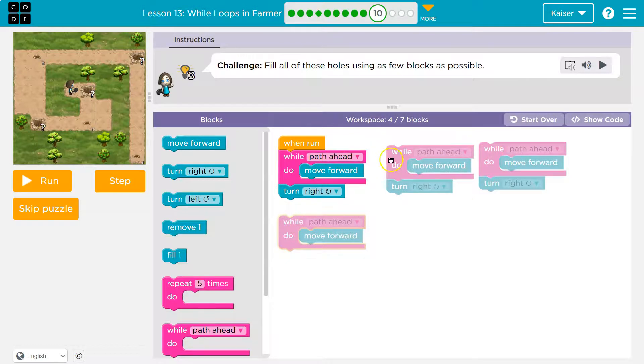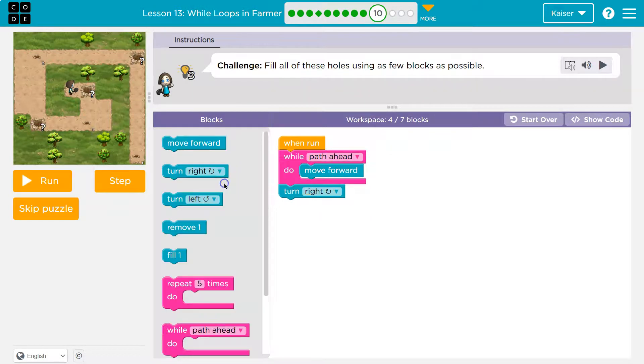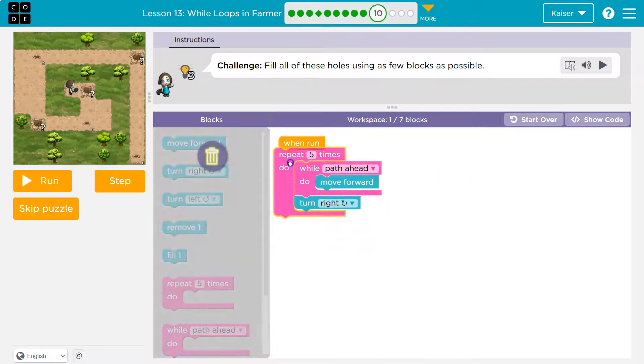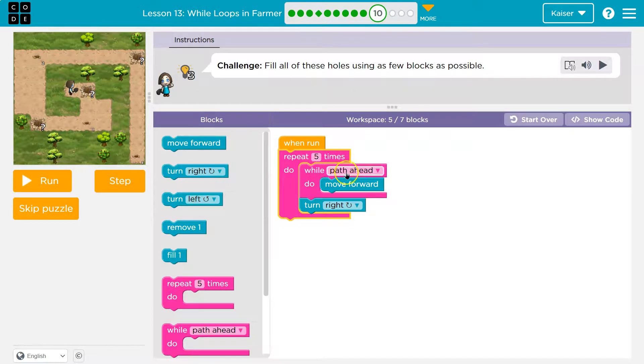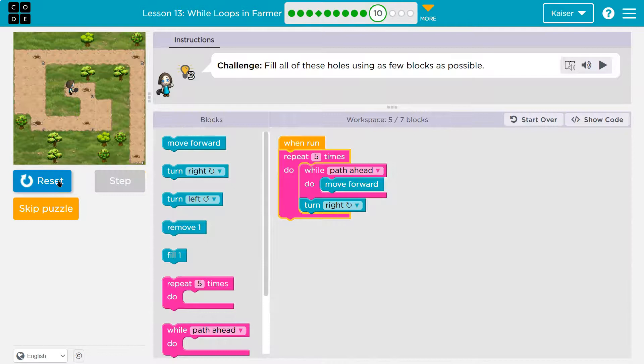Instead of doing all these while path ahead and move forward, let's see what I could do instead. What if I did, how many sides are there? What if I use one of these? I think there's five. So five times in a row, I will check if there's a path ahead. As long as there's a path ahead, I will move forward. I'll then turn right. I hit the bottom of this, and I have to repeat it four more times. So once again, is there a path ahead? As long as there's a path ahead, this loops, and I'll keep moving forward. Once there's not, I turn right. And then three more times. Let's see if this gets me to the end.